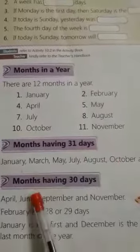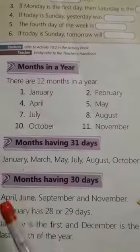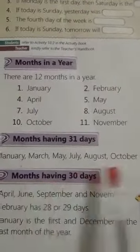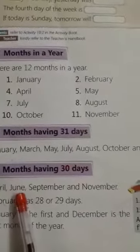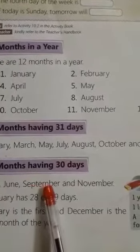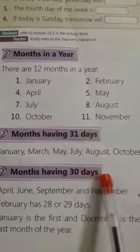And some months have 30 days. Which are they? April, June, September and November have 30 days.